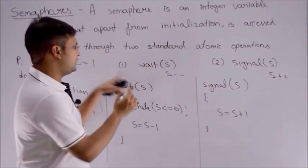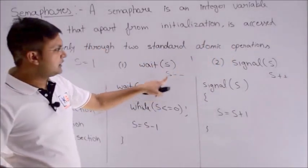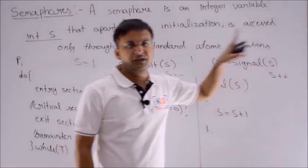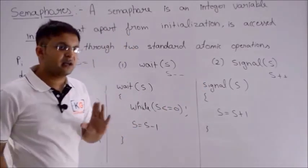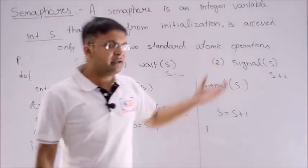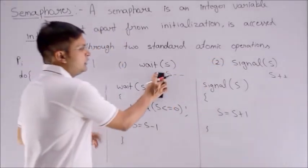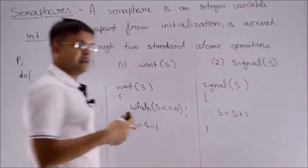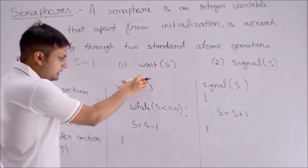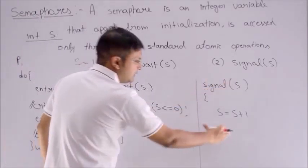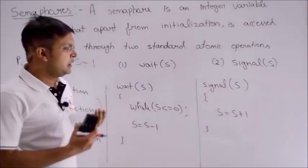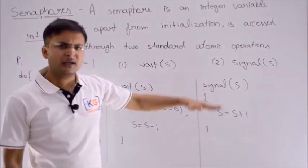For example, suppose the value is 1. If I call Wait, it does 1 minus 1, so you get 0. If I call Signal when the value is 1, it becomes 2. So you understand: Wait reduces the value by 1, and Signal increases the value by 1. Signal is very easy — it simply does S = S + 1. And Wait does S = S minus 1.